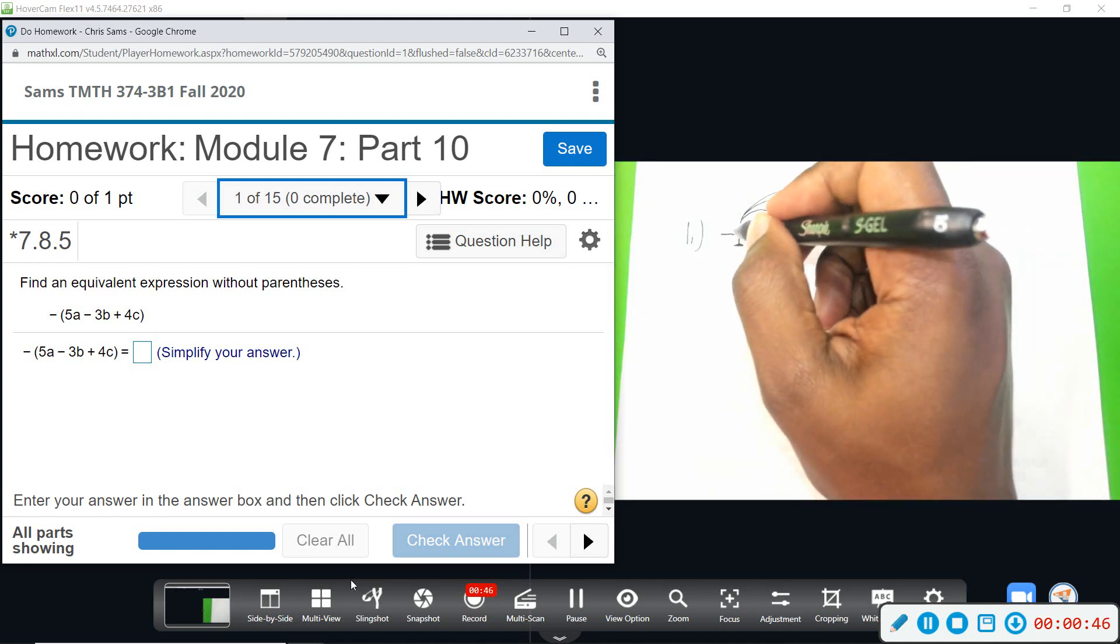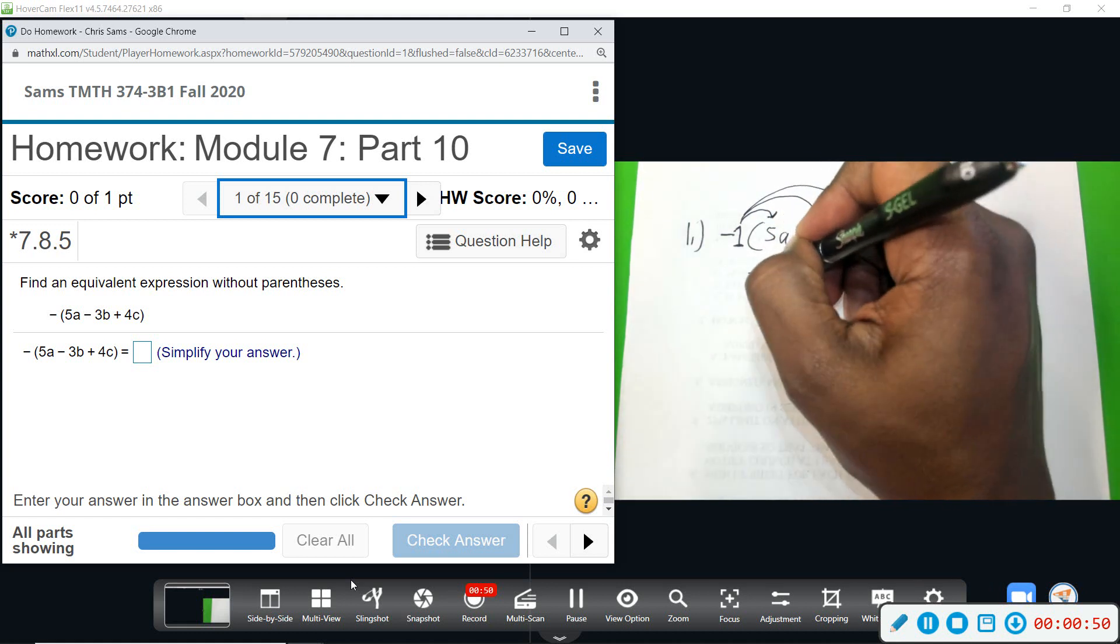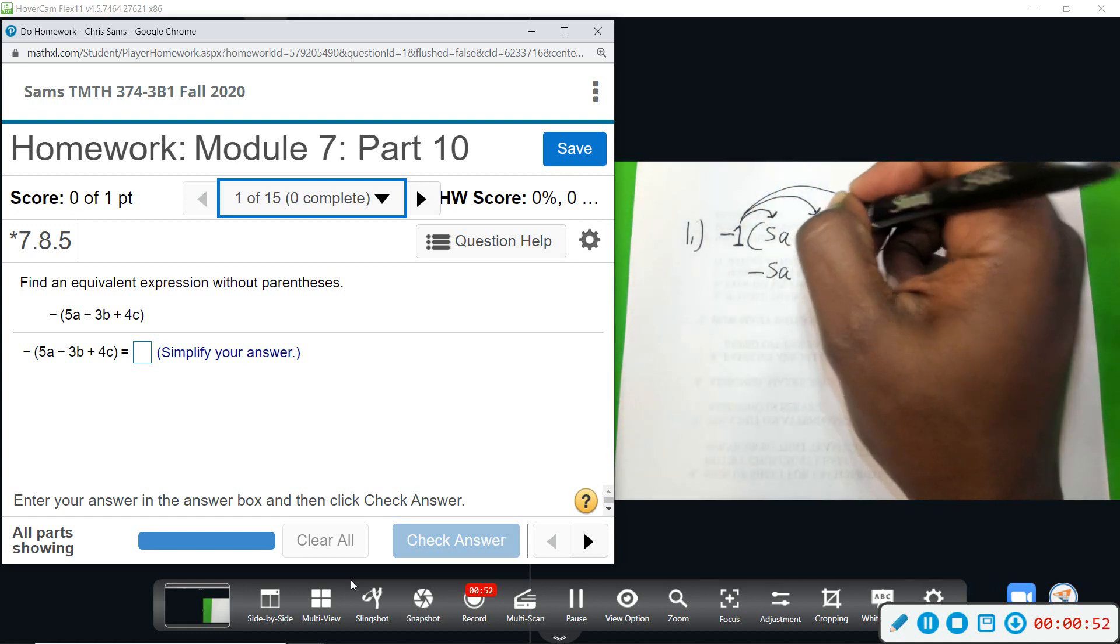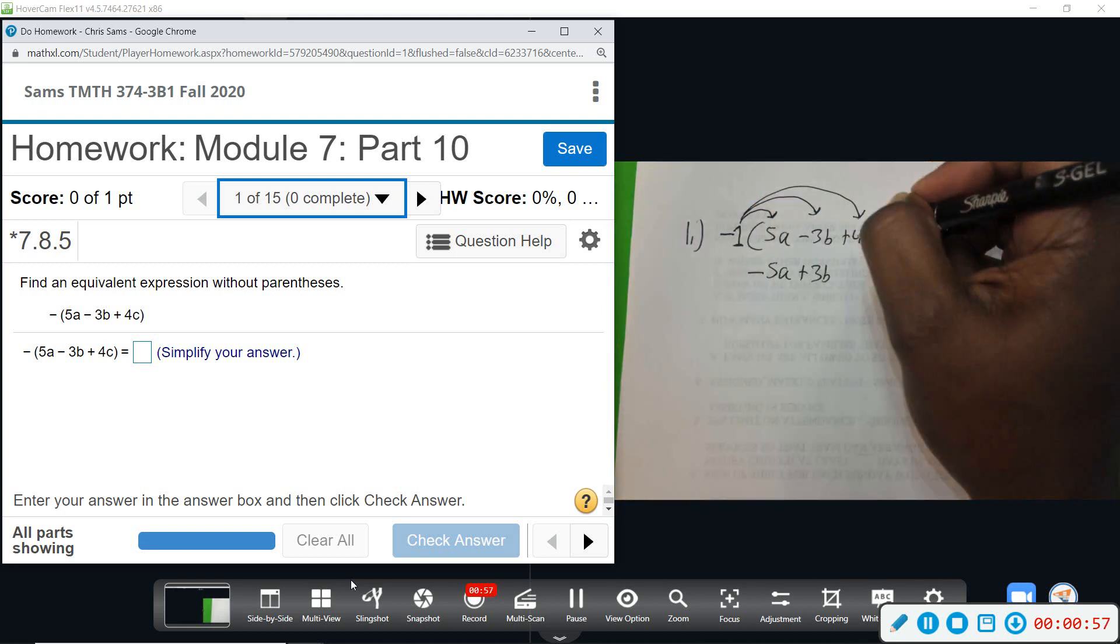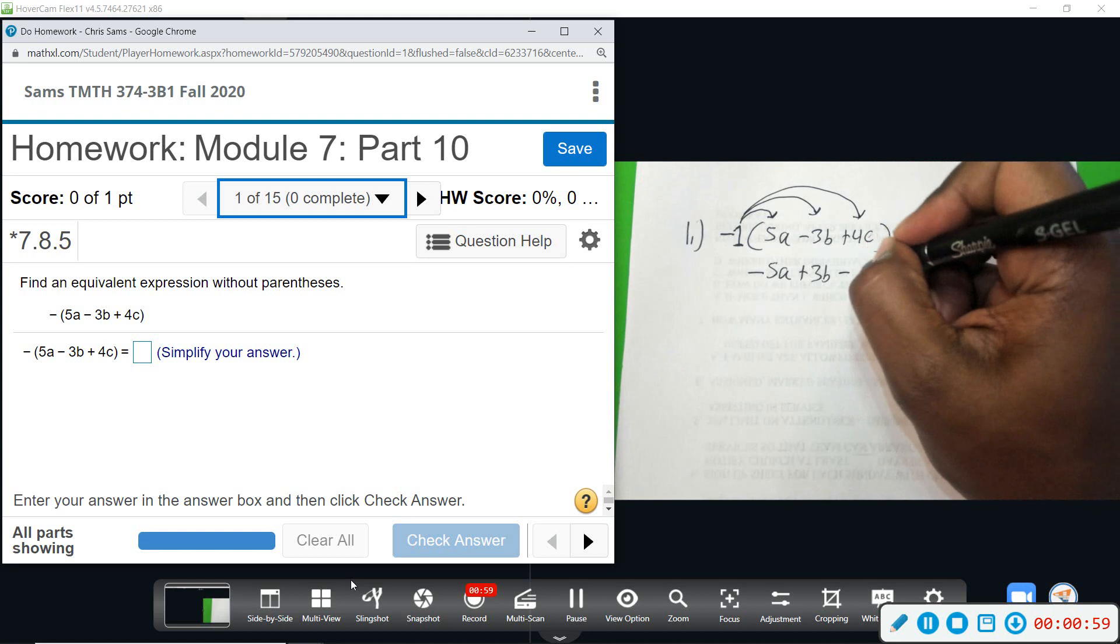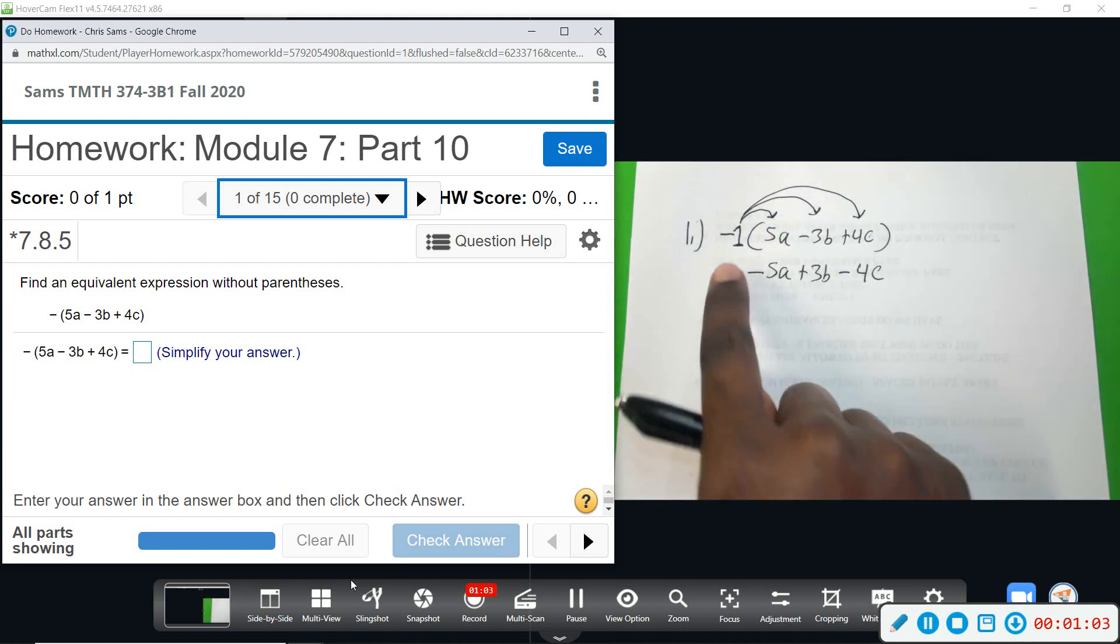So when you multiply by negative 1, this becomes negative 5a. This negative times a negative will become a positive 3b, and negative times a positive will give us a negative 4c. This is the new expression once you distribute.